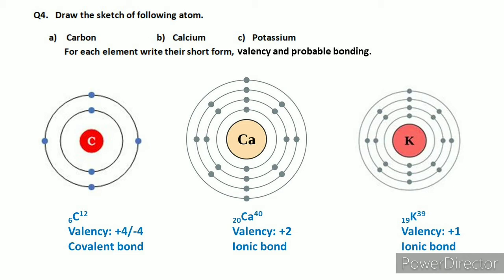Carbon has six protons, so it has six electrons. You know that the structure is created with shells for the electrons. Protons and neutrons are in the nucleus, while electrons are arranged in shells. Electrons are drawn in a proper arrangement which we call electronic configuration.